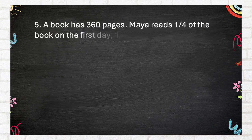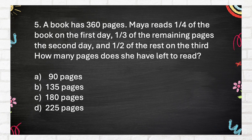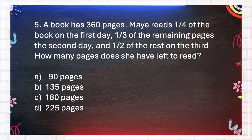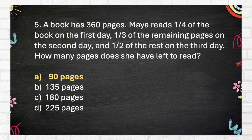Number 5. A book has 360 pages. Maya reads one-quarter of the book on the first day, one-third of the remaining pages on the second day, and one-half of the rest on the third day. How many pages does she have left to read? A. 90 pages. B. 135 pages. C. 180 pages. D. 225 pages. The correct answer is A, 90 pages.